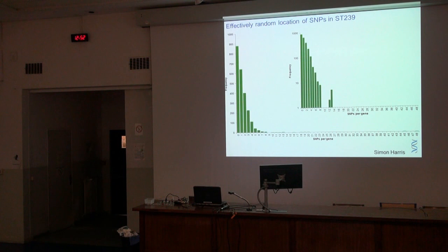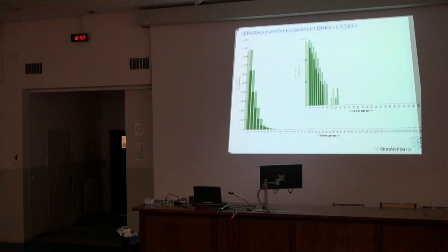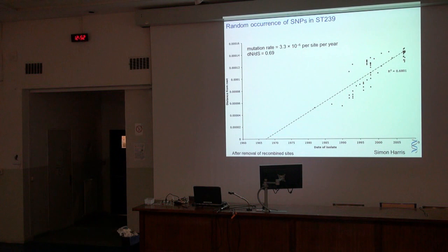The second question is: is there evidence of selection? Because these SNPs are effectively random, we can identify a clock rate — a rate of acquisition of SNPs — that is not affected by selective processes or genome acquisition. We can get an estimate of the rate of change in the genome. If you plot the date of isolation versus the number of SNPs from the root of a phylogenetic tree, you can get a straight line.